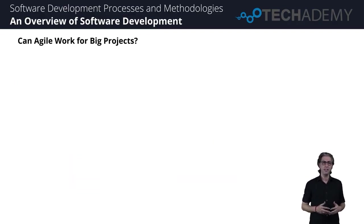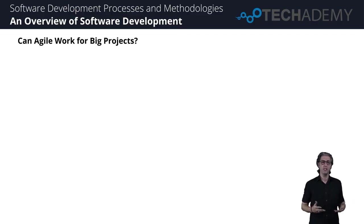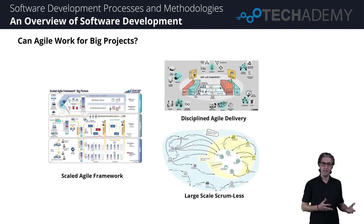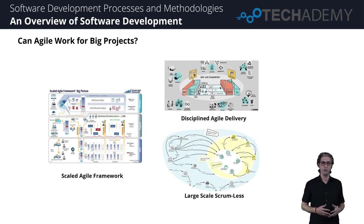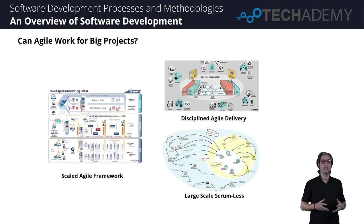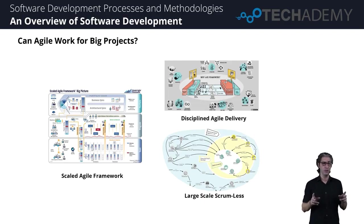As the agile model became popular in smaller-scale industry, people began to wonder if it could be applied to bigger projects. So many new models evolved, like Scaled Agile Framework, Large Scale Scrum, and Disciplined Agile Framework. Many companies are in the pipeline to take advantage of this model and are actually quite successful, but there's still judgment out there around these models and their actual effectiveness.